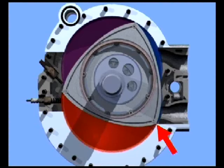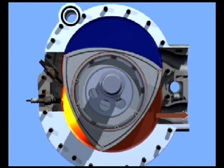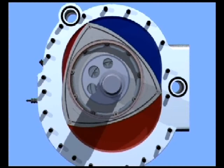Then comes the fourth stroke, the exhaust stroke. As the tip of the rotor passes the exhaust port, it opens the combustion chamber, allowing the exhaust gases to escape. The combustion chamber is reduced in size due to the shape of the housing and the movement of the rotor. This forces the exhaust gases to be expelled.